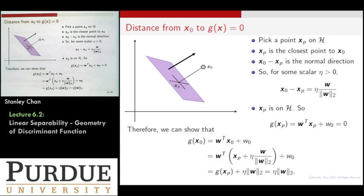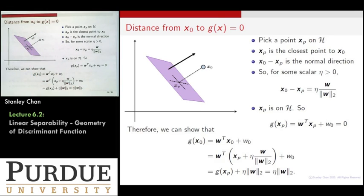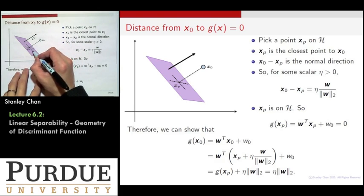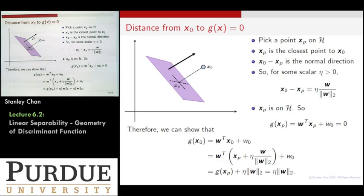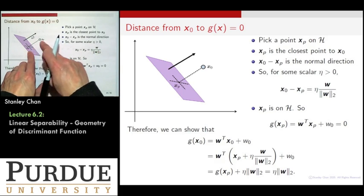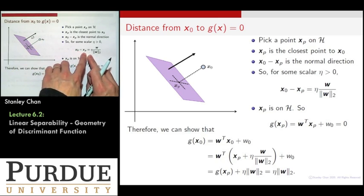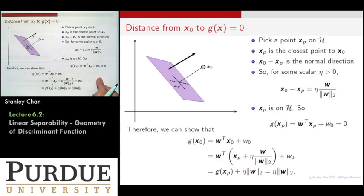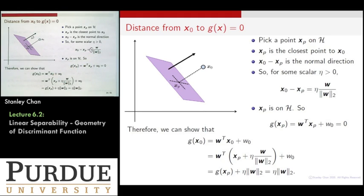Since the direction is w, the traveling direction has to be w. As long as I figure out the step size, I know how to travel from x_p to x_0. Since the traveling direction is w divided by the 2-norm of w (unit norm), we know x_0 minus x_p equals a scalar eta times the w vector. This scalar eta defines your distance between the plane and the point.